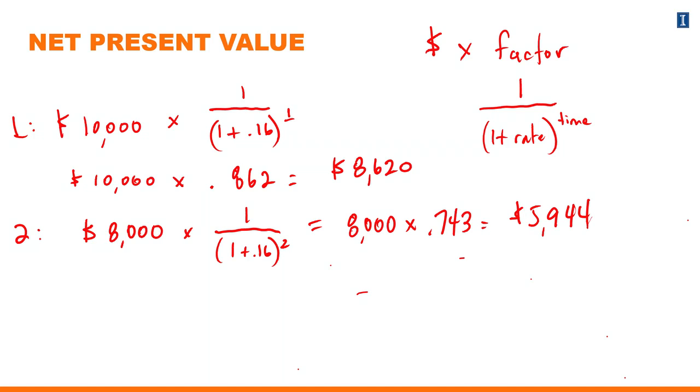When I do the same process for years 3 and 4, I calculate the $6,000 savings that we earn at the end of year 3 to be $3,846 in today's terms. And the $5,000 cash flow that I earn at the end of year 4 translates into $2,760 in today's dollars.